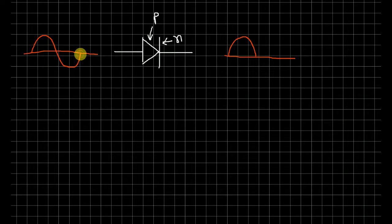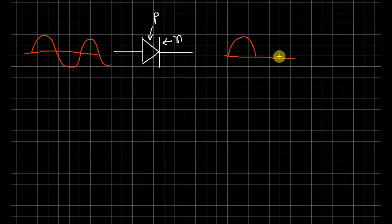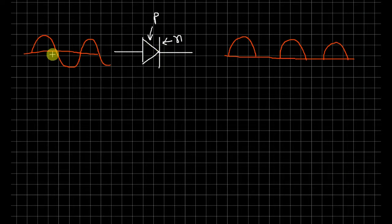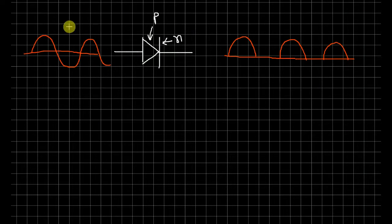Graphically, the current only flows during the positive half cycle. Only the positive half cycle passes through the diode, while the negative half cycle does not.